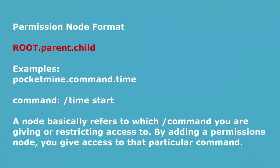How does the permission node format look? It starts with a root node, then followed by an optional parent node and optional child node. For example, the time command has the permission node pocketmine.command.time to allow a player to execute this command. An administrator grants this permission node to a player. If you grant root node access to a player, that means the player has access to all subsequent parent and child nodes. Be careful — if you don't want to give all access to a player, use a more specific node. A node basically refers to which slash command you are giving or restricting access to.